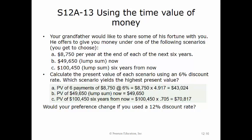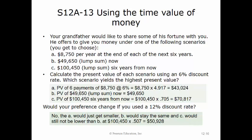The last part asks whether your preference would change at a 12% discount rate. The answer is no. The first scenario would only get smaller and is already below $49,650. The third scenario would still be the highest at $50,928, equal to $100,450 times the present value factor of 0.507 for 12% for six years.